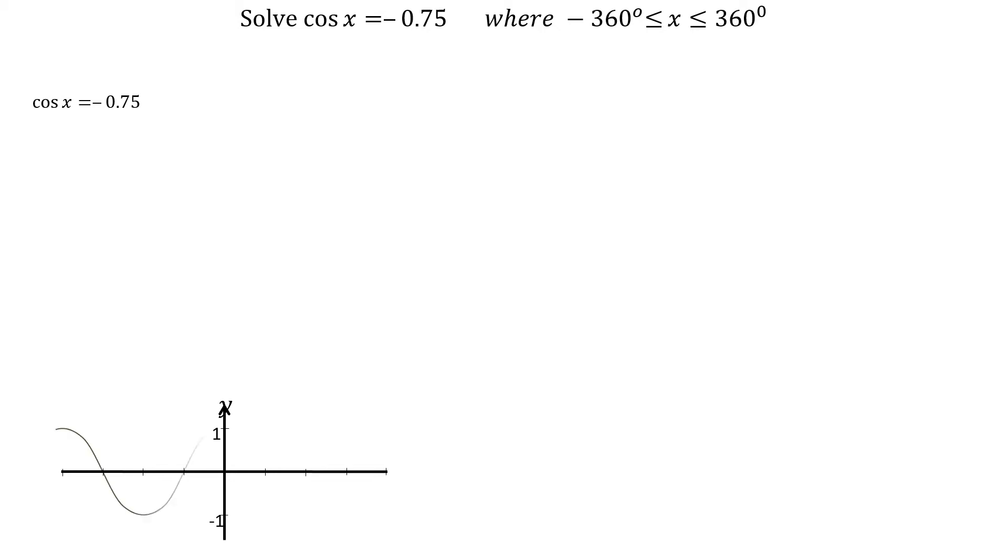To solve cos x equals minus 0.75 where x is between minus 360 degrees and plus 360 degrees, we need to first take the inverse of cos 0.75. We get x equals 41 degrees to the nearest degree. 41 degrees is our reference angle as the original equation was negative.